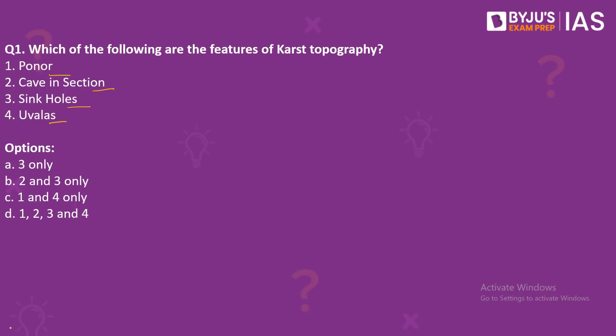Coming back to our question: Number 1 is Ponor. What is Ponor? It is a steep-sided sinkhole — a natural opening where surface water enters into ground passages, found in karst landscapes. So Number 1 is correct. Due to erosion caused by running water or surface water, a cavity is formed in the rock, and this cavity transforms into a cave.